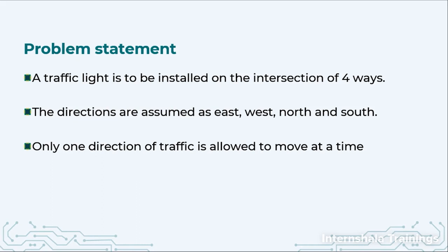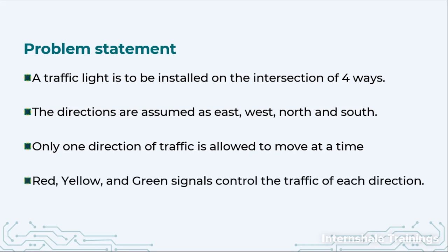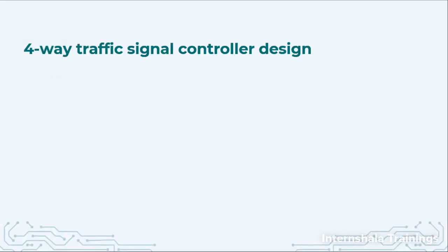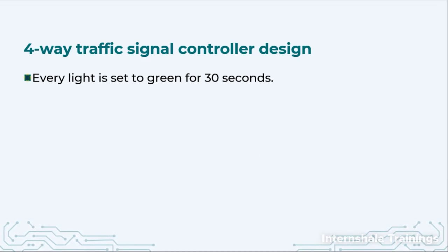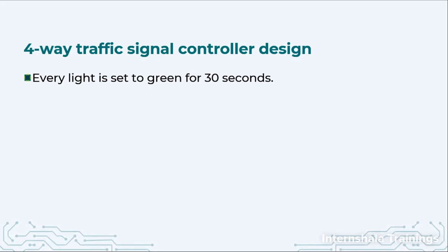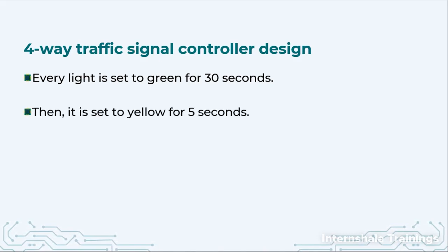That means either only the east, or only the north, or any one direction at a time. Red, yellow, and green are the three standard colors we will use to control the flow of traffic on all four directions. Every light can be set to green for a particular amount of time, which can be decided based on the traffic density — some directions can have more time, some can have less.